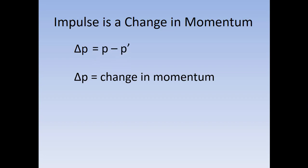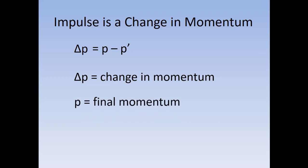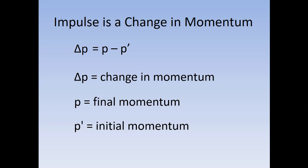This is a very specific way to find this. Change in always means final minus initial. So when we have the momentum symbol P with no apostrophe, it represents the final momentum. When we have the P with an apostrophe, it represents the initial momentum. So a change in momentum is equal to the final momentum minus the initial momentum.